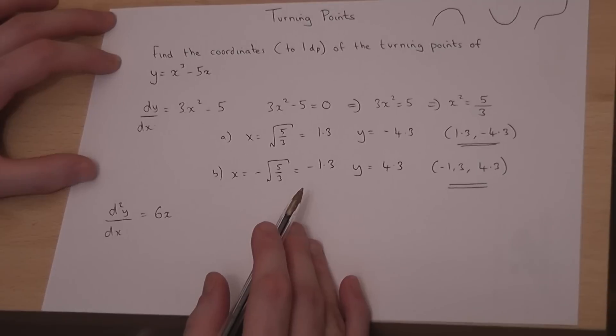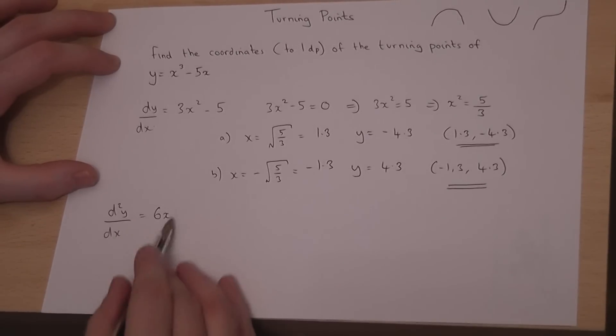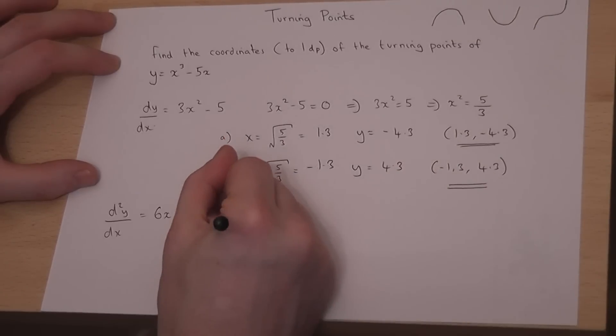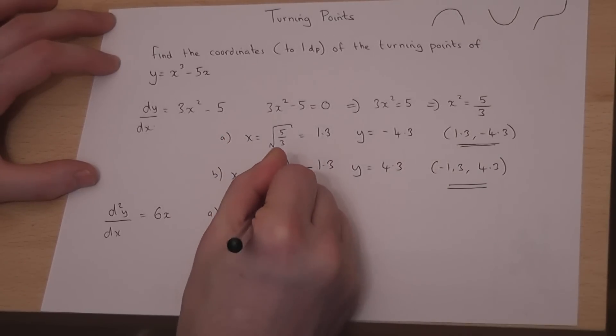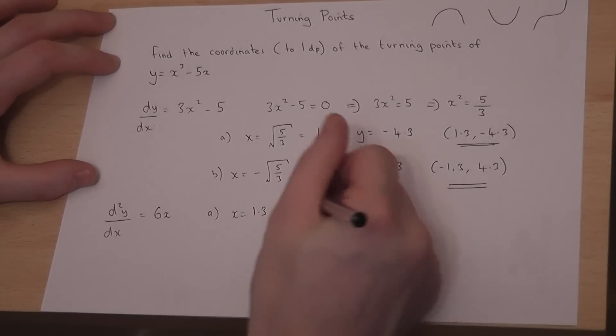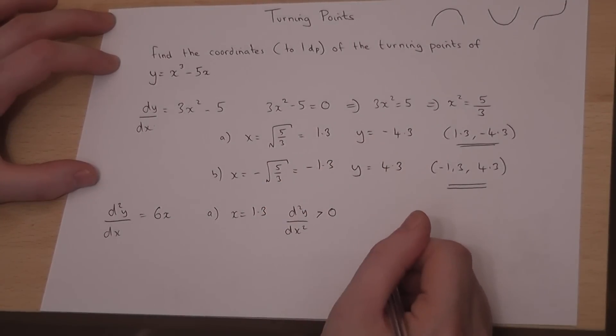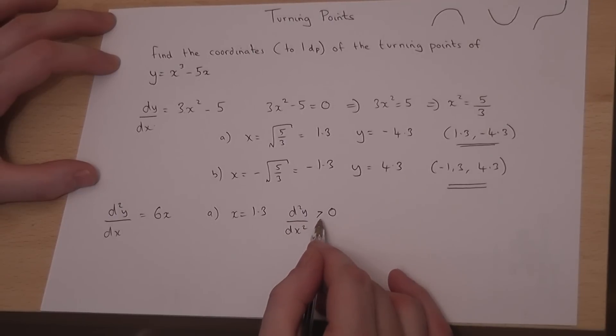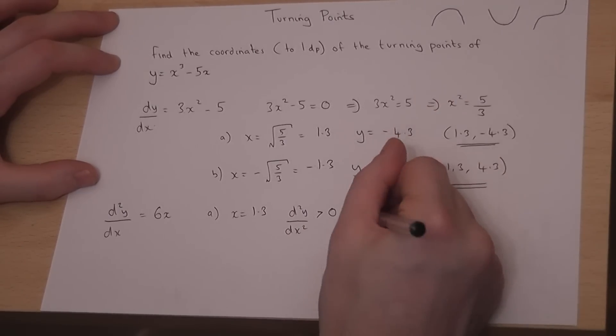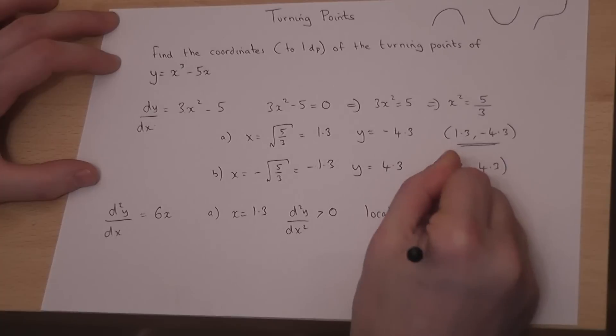And what I do is I look at what the sign of this function is for both of these x values. So, when x equals 1.3, I find that d squared y by dx squared, well, 6 times 1.3 is positive. And when this is positive, we have what's called a local minimum point. So therefore, at x equals 1.3, we have a local minimum point.